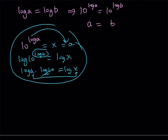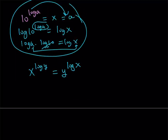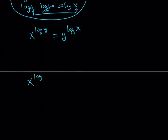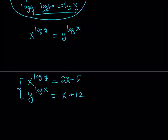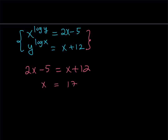We've established that x to the power log y equals y to the power log x — a really cool identity, and it's going to be super helpful solving our system. Our system is: x to the power log y equals 2x minus 5, and y to the power log x equals x plus 12. Since the left-hand sides are equal by our identity, the right-hand sides must also be equal. Setting 2x minus 5 equal to x plus 12 is just a linear equation — subtracting x gives us x equals 17. We got the x value!